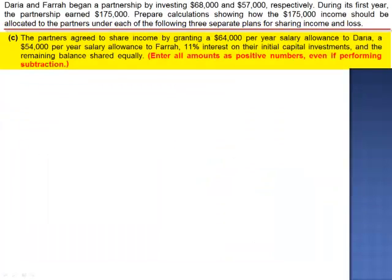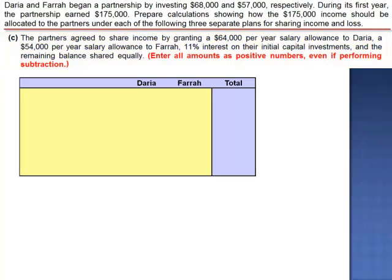Letter C: the partners agreed to share income by granting a $64,000 per year salary allowance to Daria, a $54,000 per year salary allowance to Farrah, and 11% on their initial capital investments, with the remaining balance shared equally. We begin with net income of $175,000 and calculate the allowances. Salary allowances: Daria $64,000, Farrah $54,000.